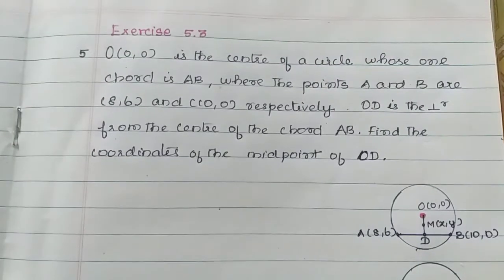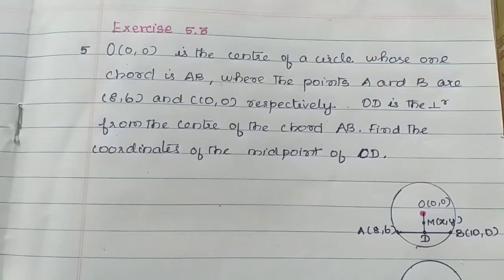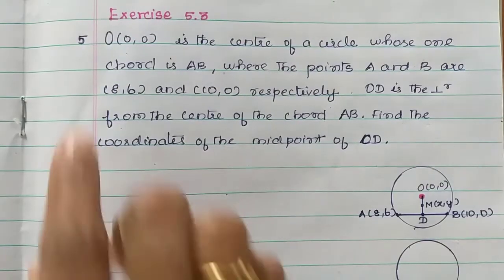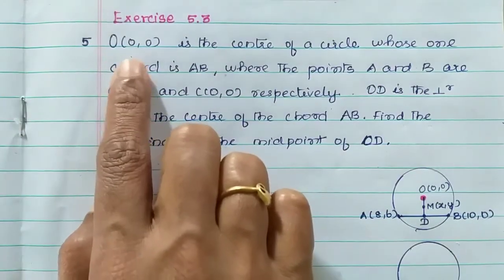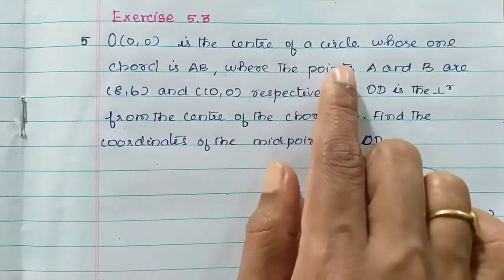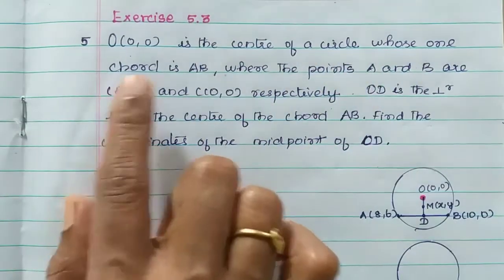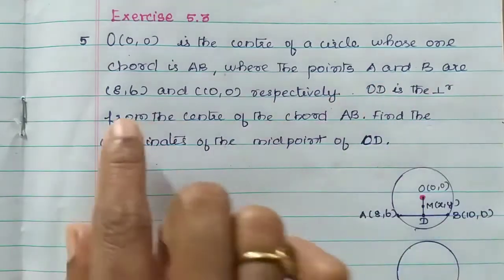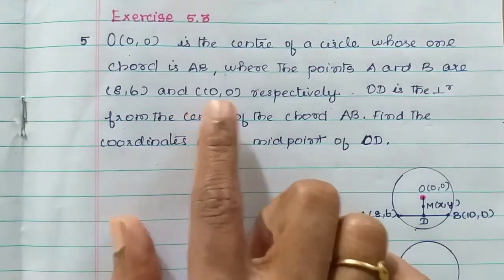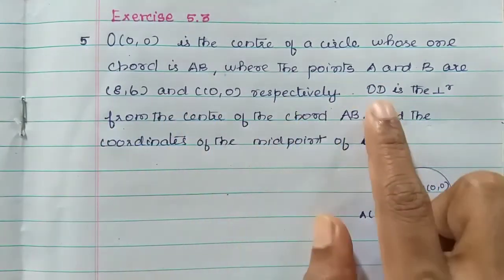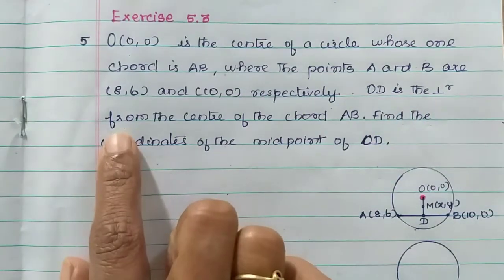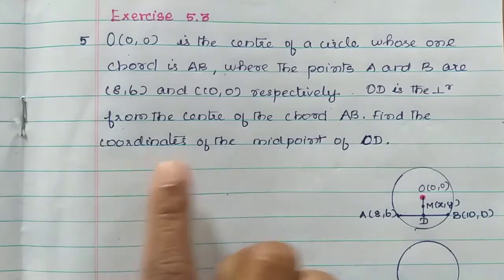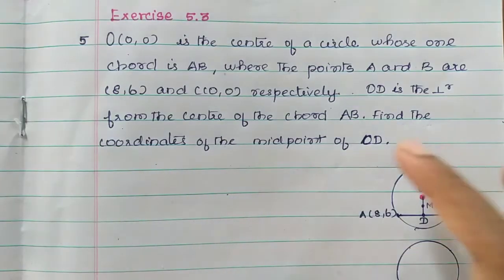Students, in this video we will learn exercise 5.3. O(0,0) is the center of a circle whose one chord is AB, where the points A and B are (8,6) and (10,0) respectively. OD is the perpendicular from the center to the chord AB. Find the coordinates of the midpoint of OD.